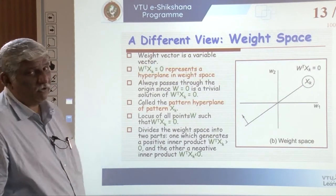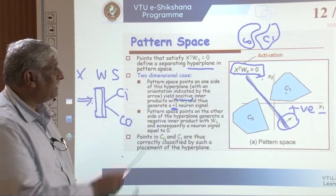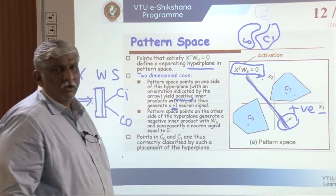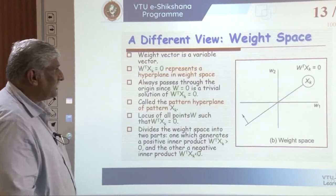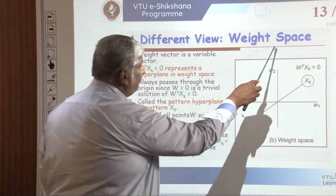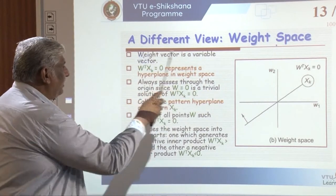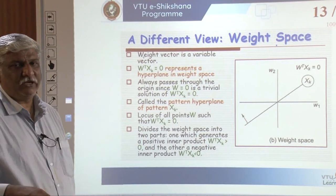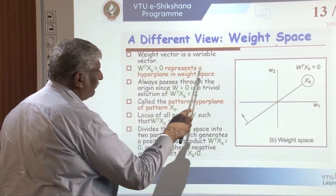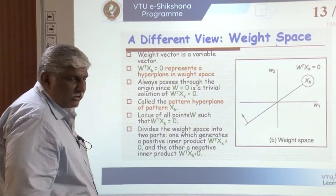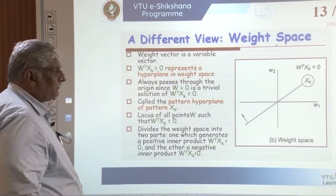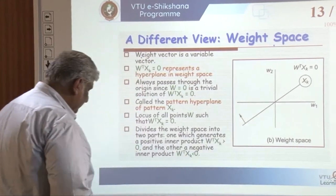Now, a different view in weight space. In pattern space, a pattern is classified into either C0 or C1. In the second approach — weight space — we choose the weight vector as a variable vector. The weights are going to vary. W-transpose times X_k equals zero represents a hyperplane in the weight space. In the previous case it was pattern space; here we call it weight space. The equation is W-transpose times X_k equals zero, compared to X-transpose times W_s equals zero in pattern space.